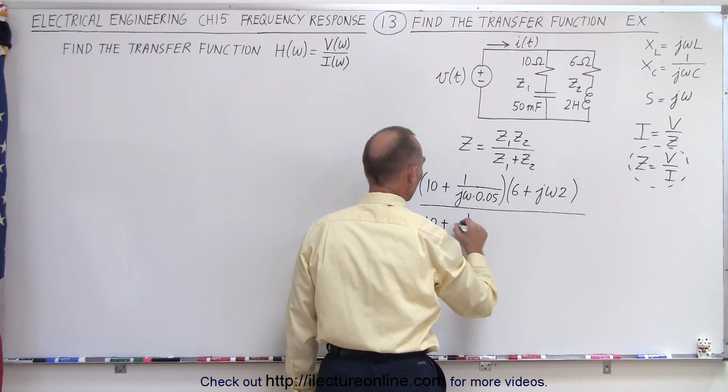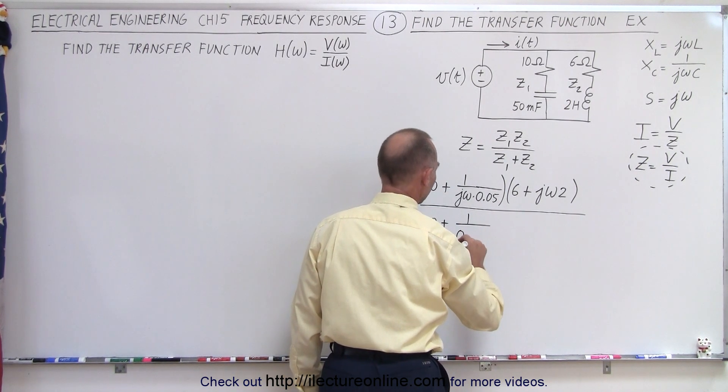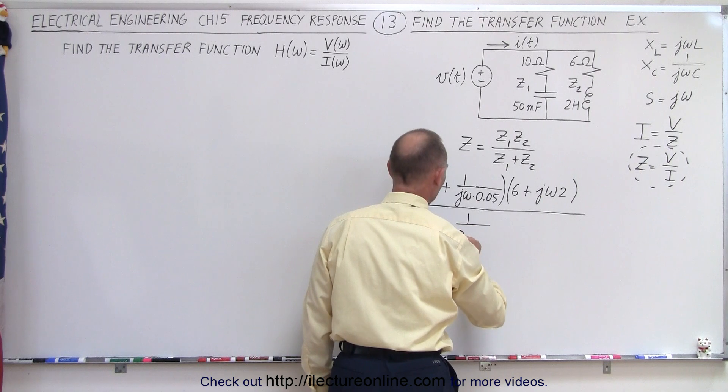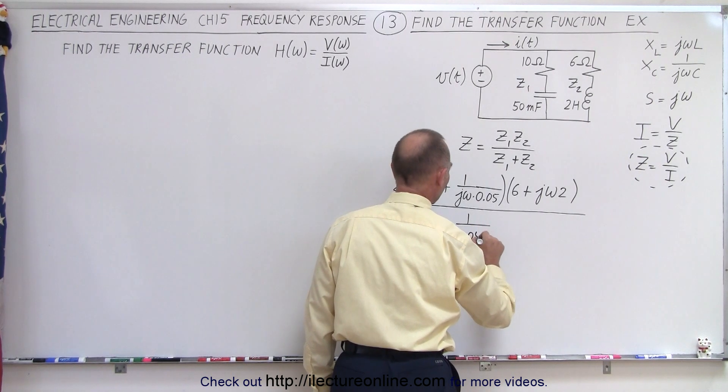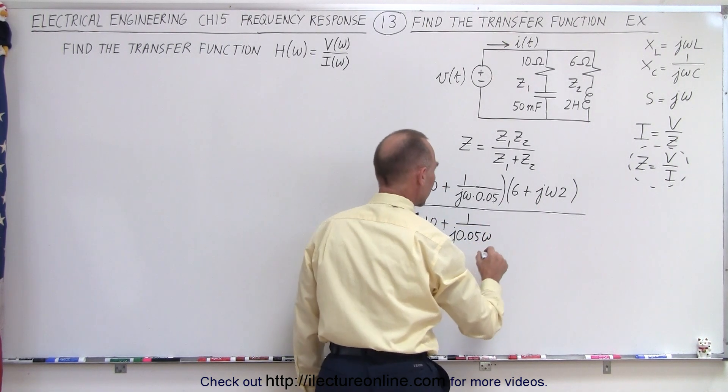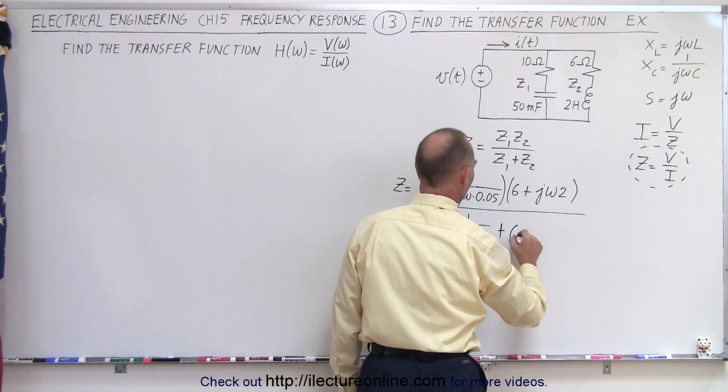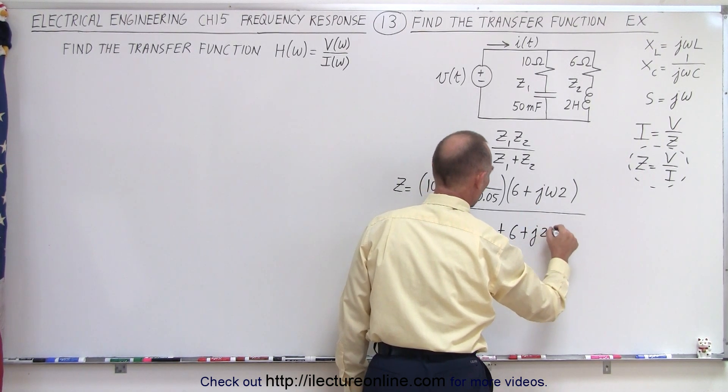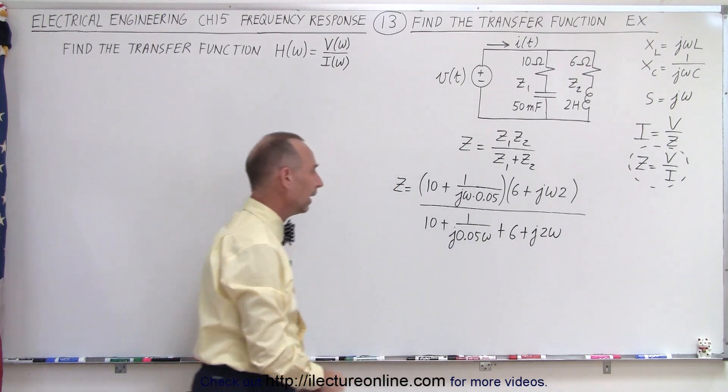And the whole thing divided by the sum of the two, which is 10 plus 1 over, I'll put the J first, J times 0.05 times omega, plus 6, and plus J2 omega, like that.